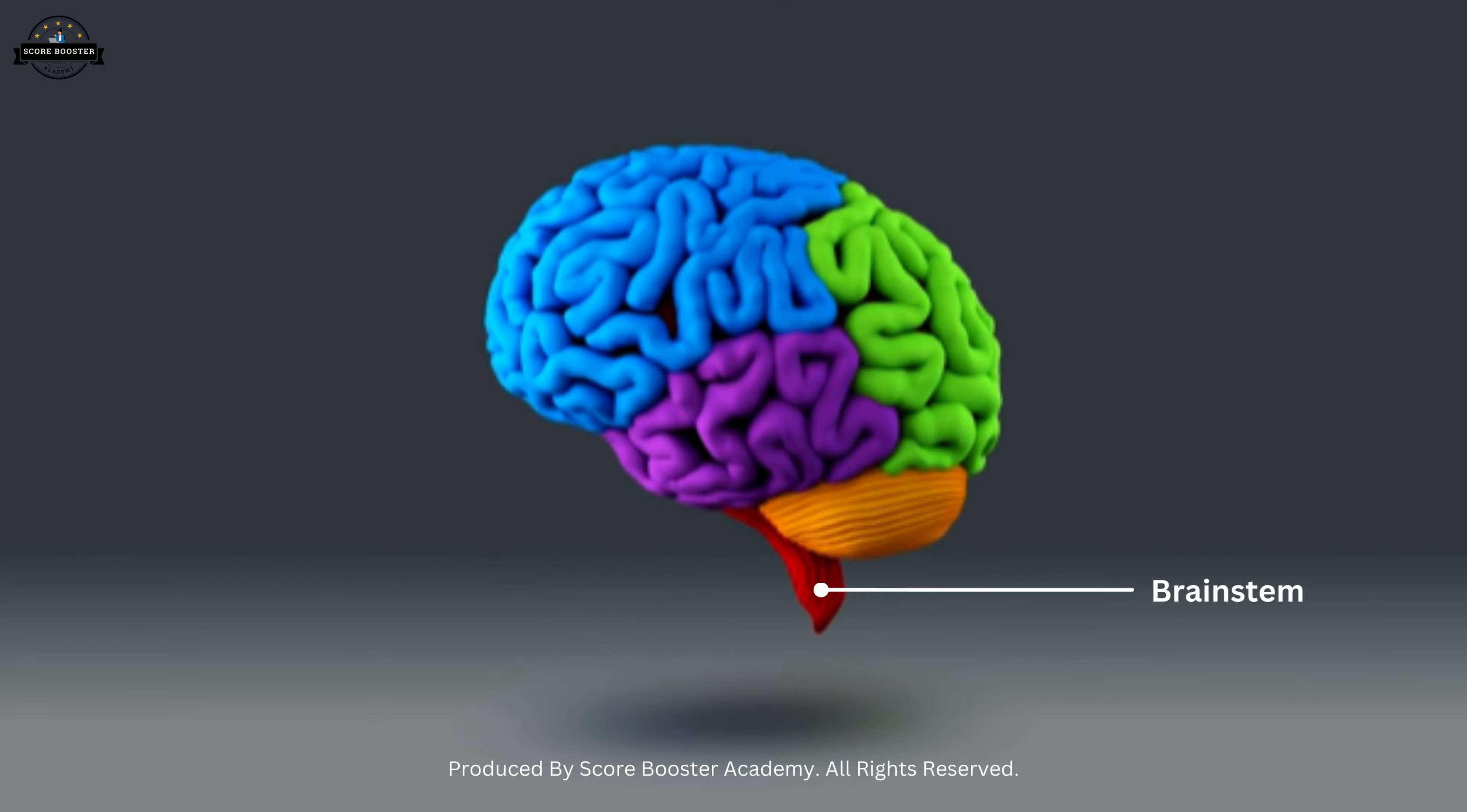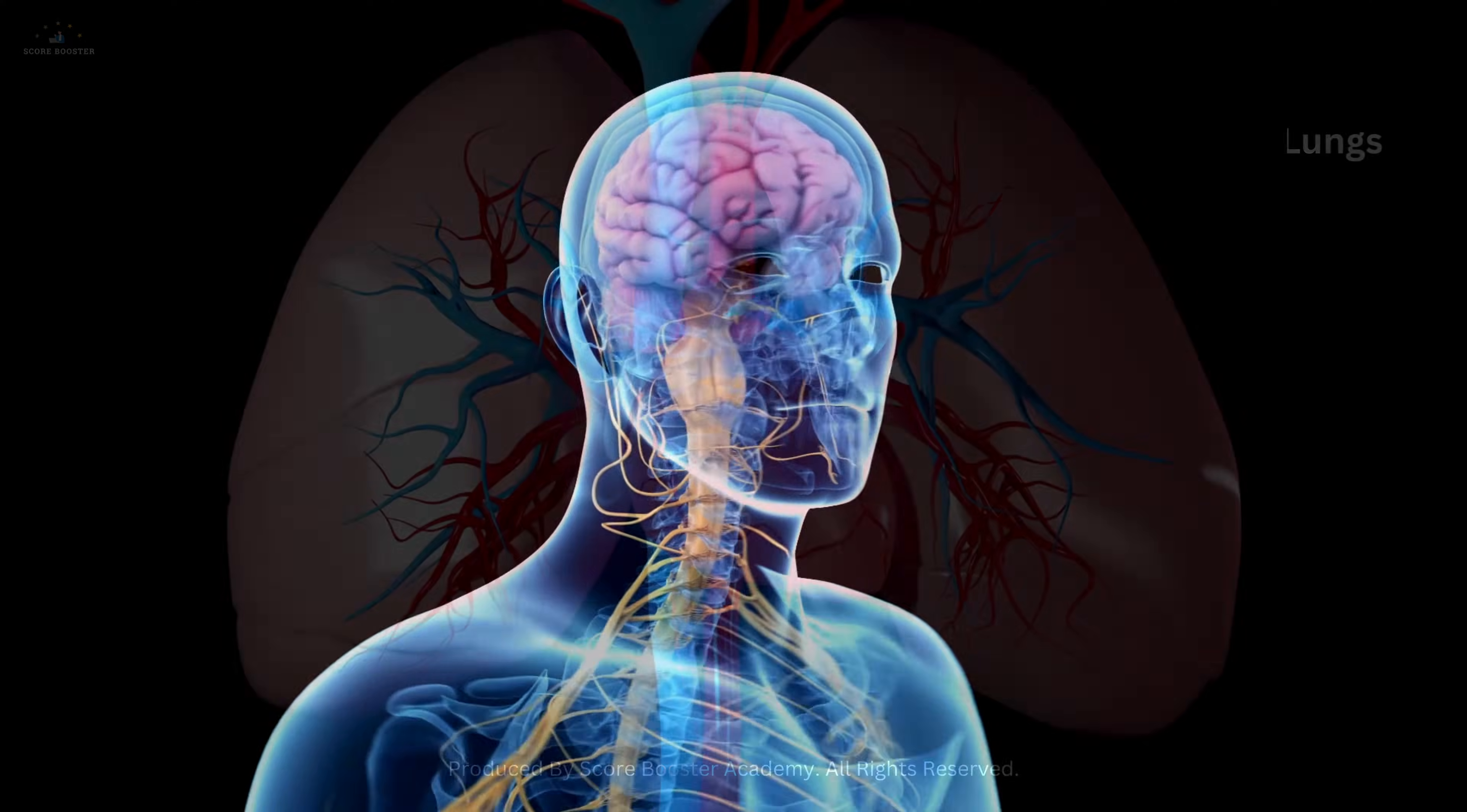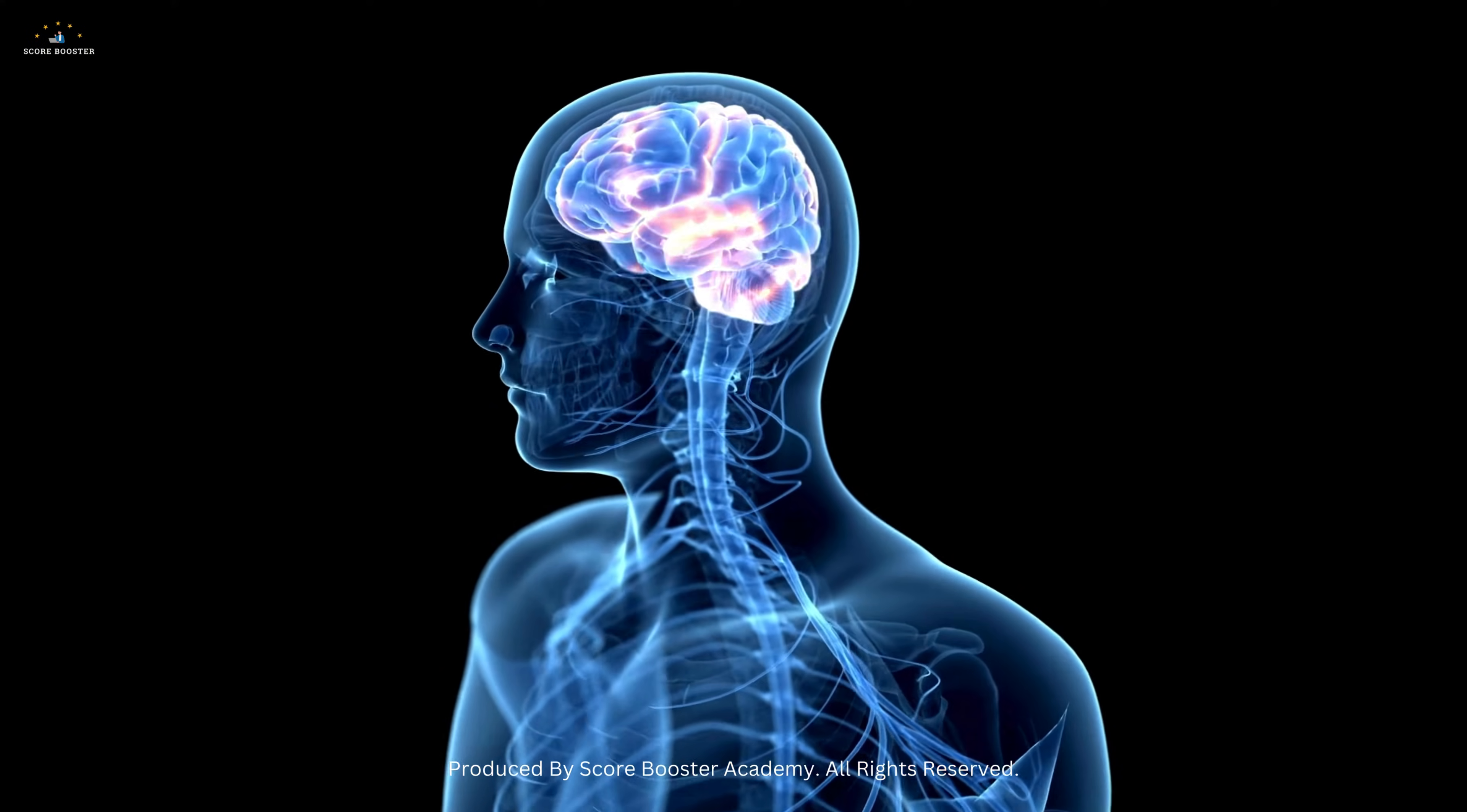The brainstem, which connects the brain to the spinal cord, controls vital involuntary functions like breathing and heartbeat. This division of labor within the brain allows us to perform a wide range of activities seamlessly.